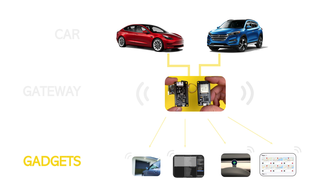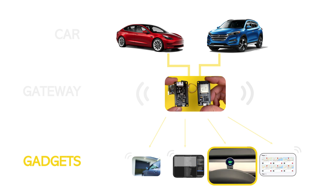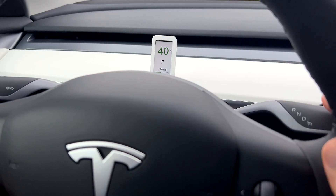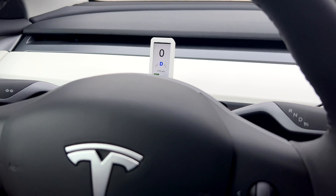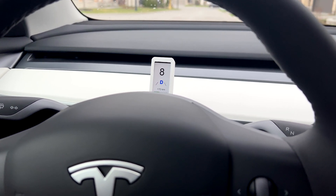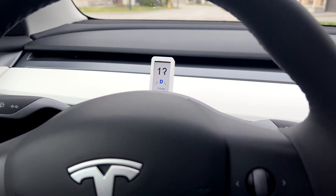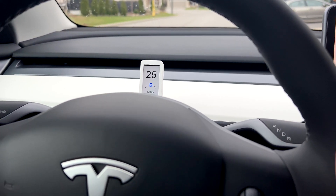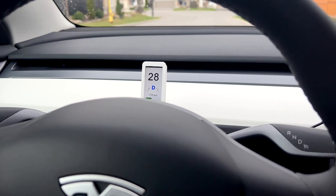I'm already working on a dozen more gadgets. One that really stands out for me is this small dash I made for my Model 3. I have a gateway connected to my Tesla and an ESP32 board with a screen processing all the relevant IDs, showing things like range, speed, gear, and the battery state of charge.